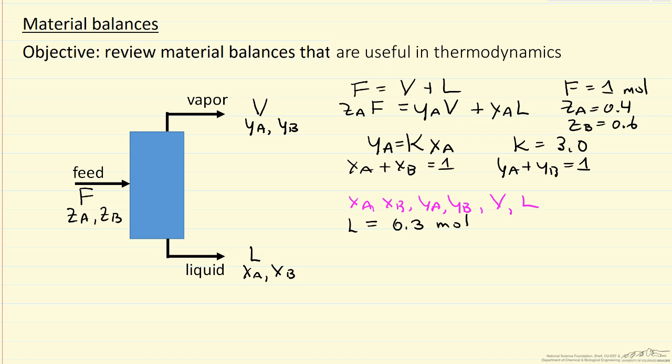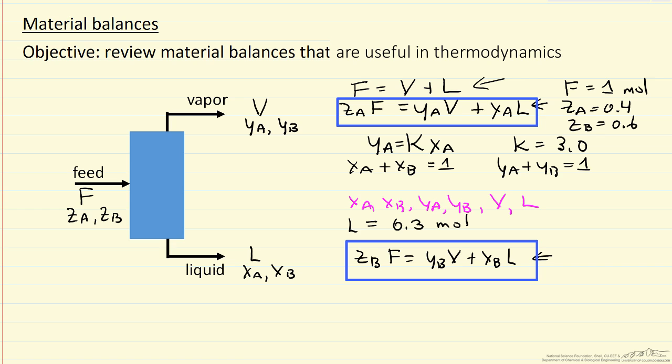Now, you might think we should be able to write down another equation for component B, that's a legitimate material balance, but notice if we take this equation and add it to this equation, we get this equation. So this is not an independent equation. It's a legitimate equation, but it doesn't get us closer to the solution.